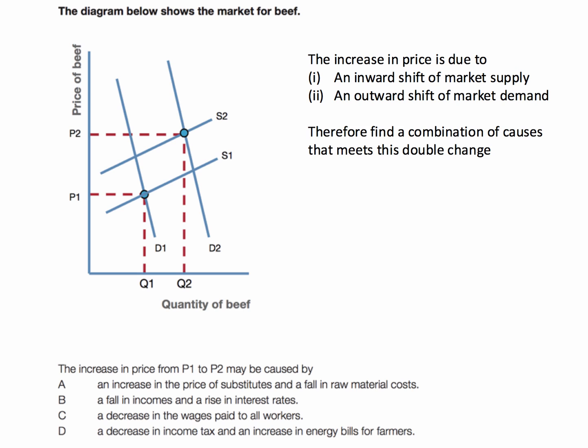Let's work through the answers. A is wrong. An increase in the price of substitutes would cause an outward shift of demand, but a fall in raw material cost would cause the supply curve to shift outwards.